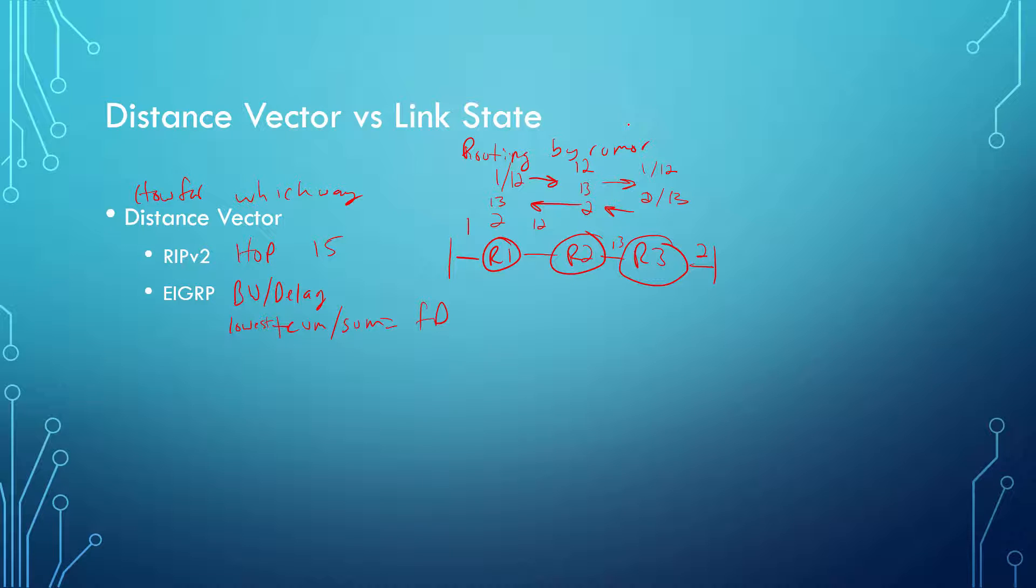This is what they are commonly referred to as routing by rumor. You only know about what it is you've been told about. So R1 only knows what R2 told it about. If R3 adds another link...